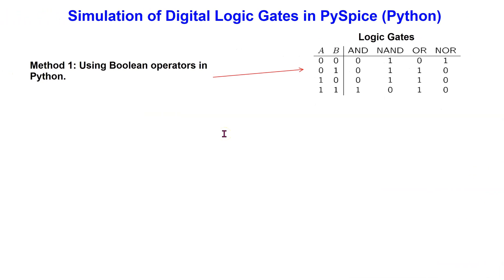There are three methods which can be used to simulate digital logic gates in PySpice. The first method is to leverage the native programming ability in Python, and use the in-built Boolean operators to simulate the logic gates. This method is a simple solution, but does not leverage circuit simulation capabilities in PySpice.